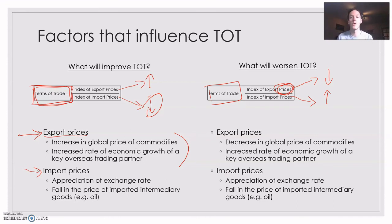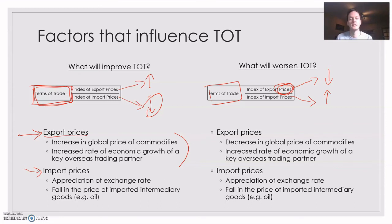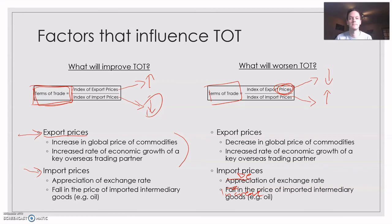Conversely, if our import prices go up, that's going to make terms of trade go down as well. What could cause that? A depreciation of the exchange rate is going to increase those particular import prices. And an increase in the price of imported intermediary goods would also do that. So if import prices go up, it's going to have a detrimental effect on the terms of trade.